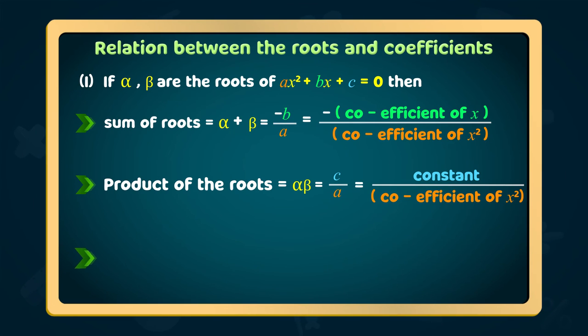Third point: difference of the roots equal to |α - β| = √(B² - 4AC) / |A|.